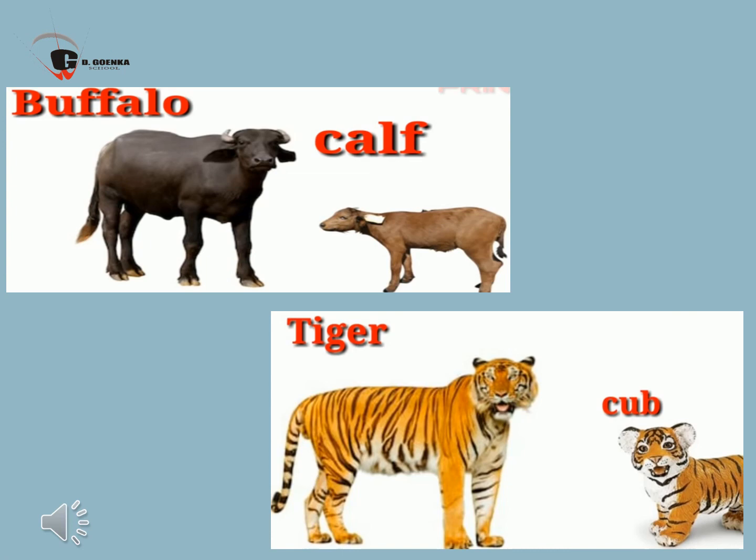Our last animal is tiger — Cub. Baby of a tiger is called cub. Tiger cubs are born blind and only half of the cubs survive. Newborn cubs can't see anything. They only follow the scent of their mother.